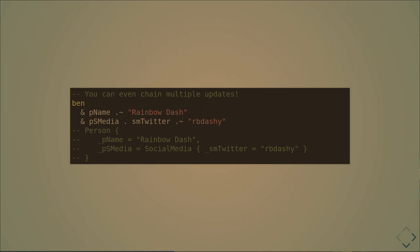We can also chain updates together using the `&` operator. It looks a bit weird but it's nice to see, because you can just copy this and it will work. This does two updates: it's updating the name and the Twitter handle. We pass our Ben thing in and it updates both fields.